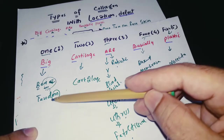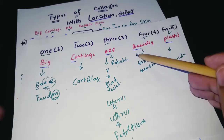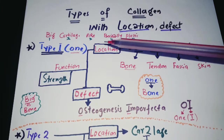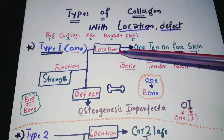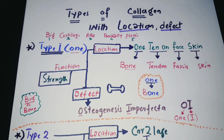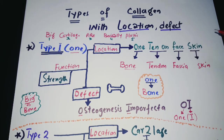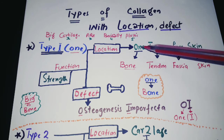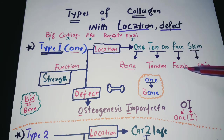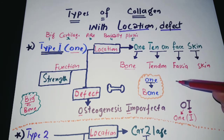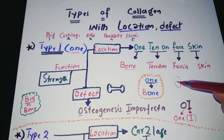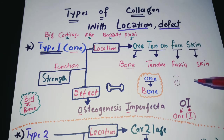For Type 1, you can remember more with the phrase: 'one tin on the face of skin.' One is for Bone, T-E-N-O-N is for Tendon, Face is for Fascia, and S is for Skin. So Type 1 collagen is found in bone, tendon, fascia, and skin.